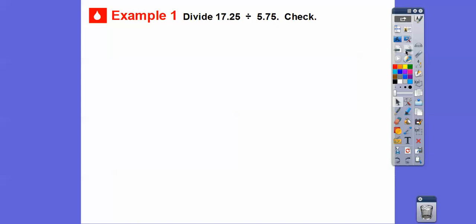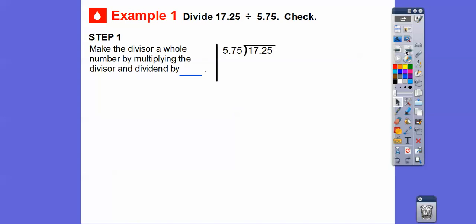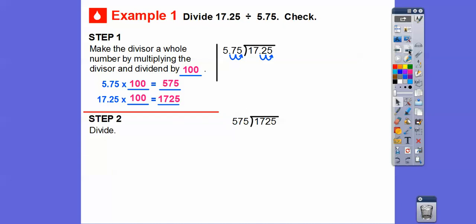Divide 17.25 divided by 5.75, and let's check. Let's make the divisor a whole number. We're going to multiply it by 100. That'll move it two places. So we're going to multiply both numbers by 100, and that'll move the decimal two places to the right. Now we're just going to divide 575 into 1725.